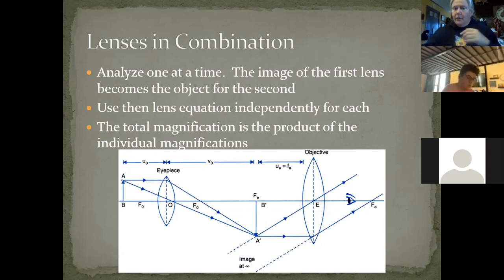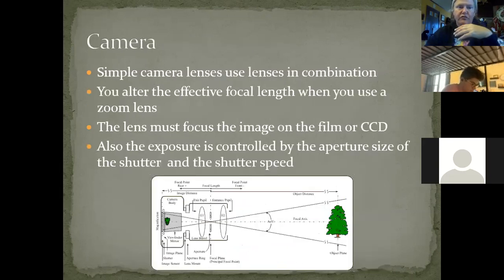The eyepiece will take that image and further enlarge it and give you the magnified image. We talked about how you do the lens equation for each one, and then the total magnification is the product of the individual ones.